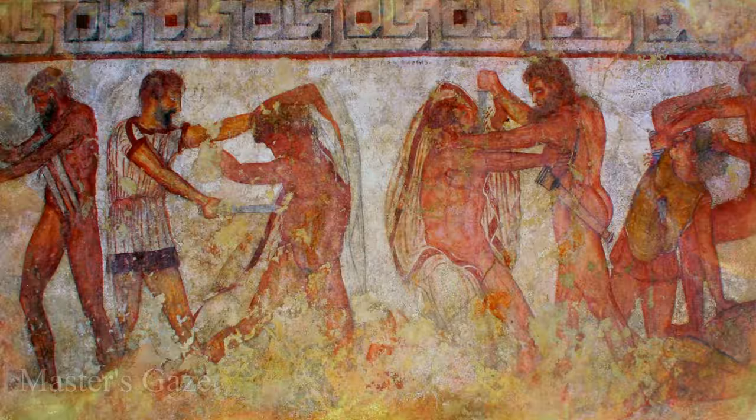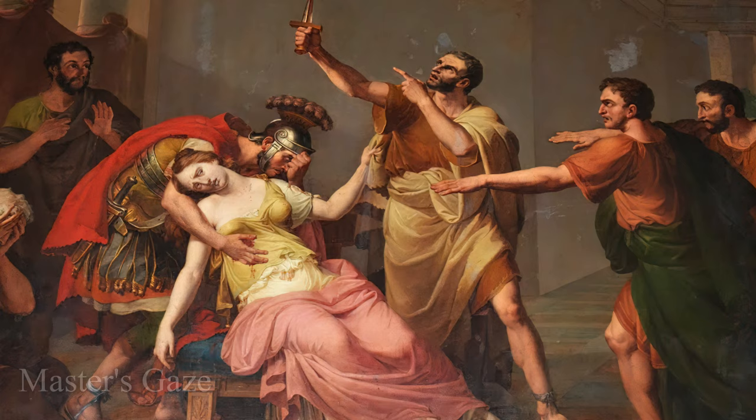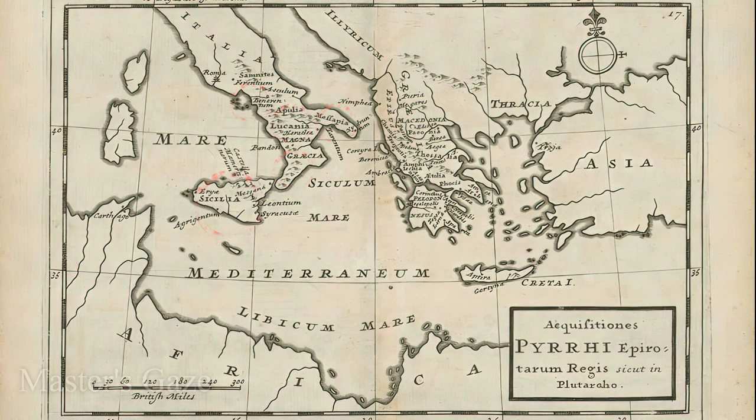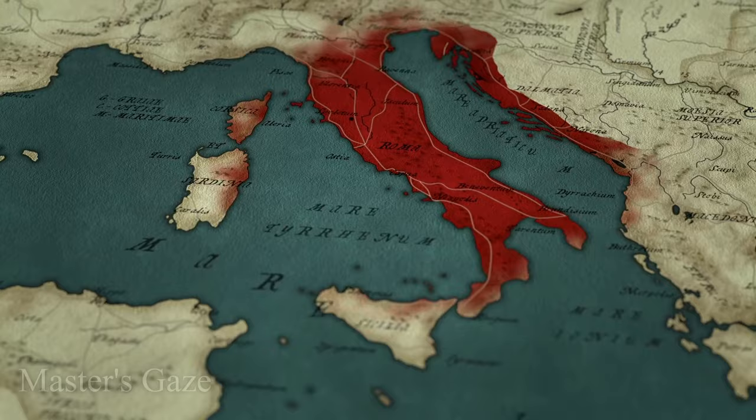In 509 BC, the Etruscan civilization was in decline, and the seventh and last Etruscan king of Rome, Tarquin the Proud, was overthrown. With the separation from Etruscan culture, the Romans came into contact with the Greeks, who had colonies in southern Italy, culminating in the conquest of Magna Grecia, Hellenic Greece, Macedonia, and Asia Minor. In this period, we see the first works of art of Greek origin in Rome.